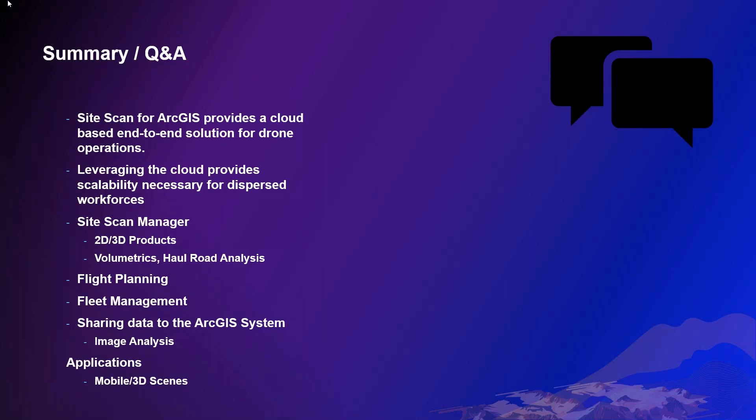On removing equipment from models to avoid false volume calculations: Site Scan generates both a digital surface model — which shows everything — and a digital terrain model that automatically eliminates equipment. So if you have an excavator on a stockpile, it will do its best to clear it off so volume measurements don't include it. For further refinement, ArcGIS Pro has many tools to reclassify and customize the classification of point clouds or the terrain model for even more accurate measurements.